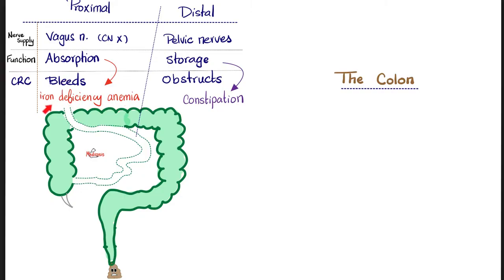In fact, if you have an old patient with iron deficiency anemia, this is a gastrointestinal bleed until proven otherwise. By the way, did you know that you can tell the difference between a patient who eats cheap meat versus expensive meat just by looking at their stool? But that's a story for another time.